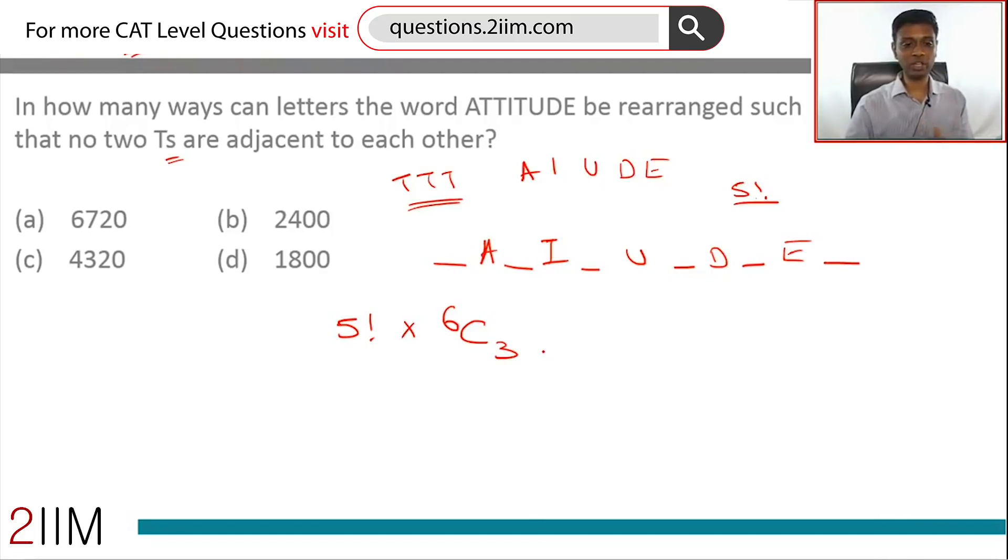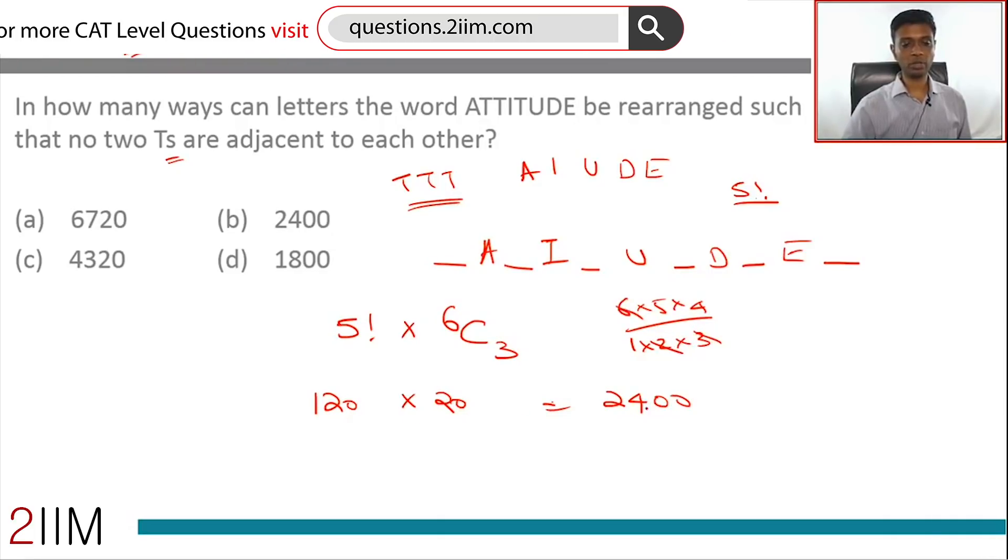We select three slots from six. So 6C3 × 5! - 5! is 120, 6C3 is... 6 × 5 × 4 / (1 × 2 × 3), this simplifies, 5 × 4 = 20. So 120 × 20 = 2400.